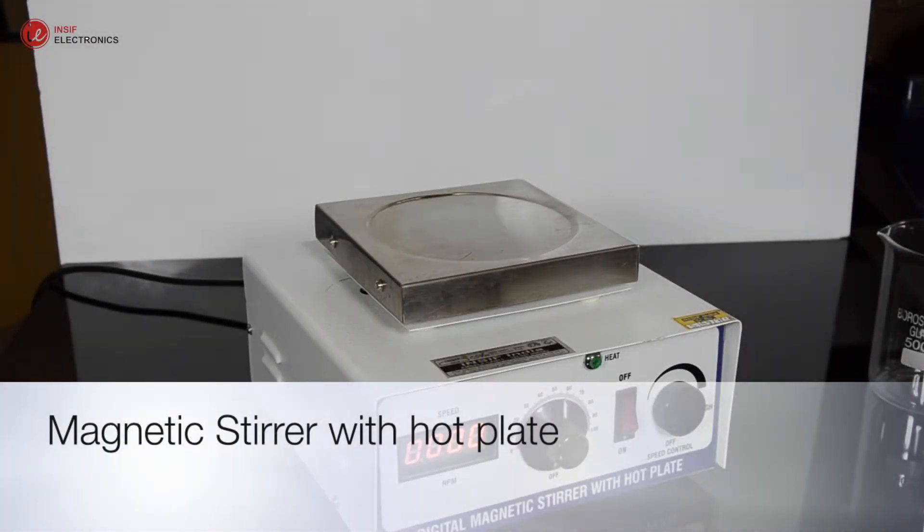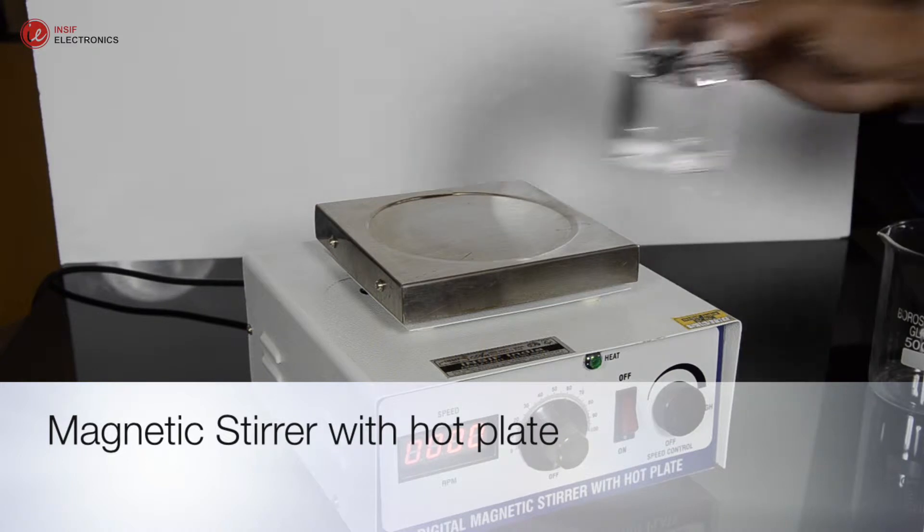Magnetic stirrer with hot plate is used to uniformly heat the liquid with stirring feature.